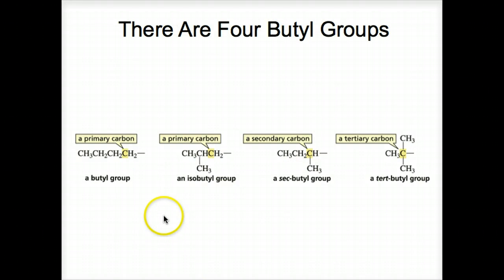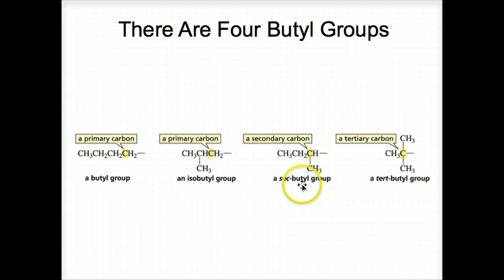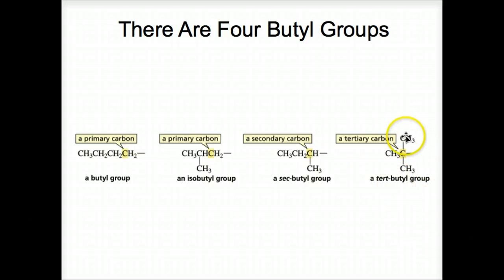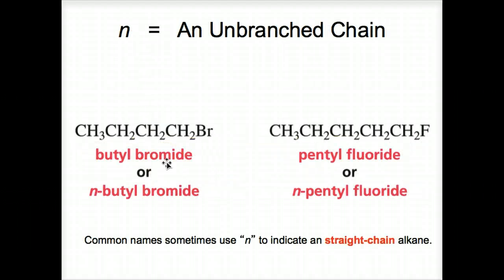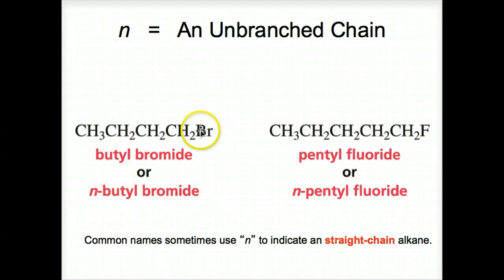There are four butyl groups. Here's a butyl — butane has lost a hydrogen. Isobutyl has branching. Sec-butyl is off of a secondary carbon — this carbon is bonded to two other carbons, so we call it secondary. Here's tert-butyl, because this particular carbon is bonded to three other carbons. Sec-butyl is bonded to two other carbons. Isobutyl again has branching. This is a straight-chain butyl group. Sometimes you'll see the letter 'n' (for unbranched), meaning it's a straight chain.